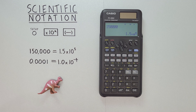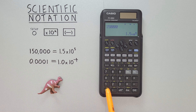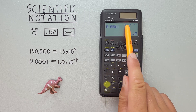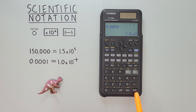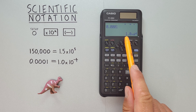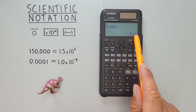This also works with very small numbers. For example, 0.0001 — if we enter that, since we're in scientific notation mode and hit EXE, our result is converted to 1 times 10 to the power of negative 4.